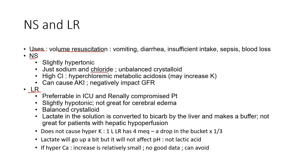The chloride in NS is really what causes issues — it causes hyperchloremic metabolic acidosis, and can even bump up potassium a little bit. Even though NS doesn't have potassium in it, it can also cause AKI because chloride has a negative impact on GFR. The kidneys use chloride to sense flow, so if chloride is very high, the kidney reduces GFR thinking it's receiving too much volume — it tricks the kidney.